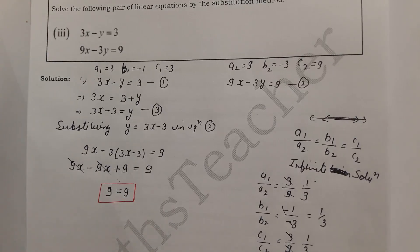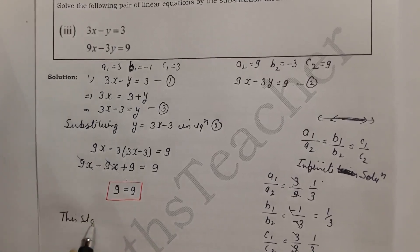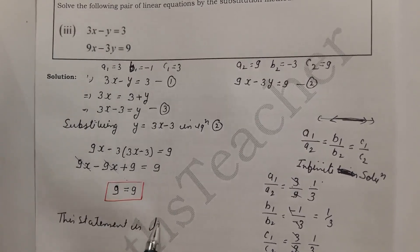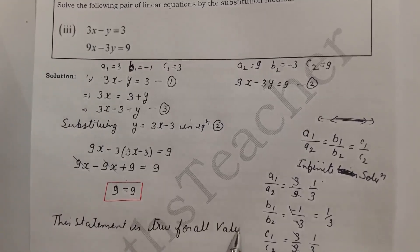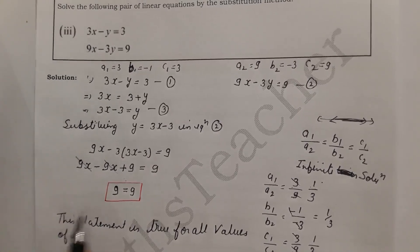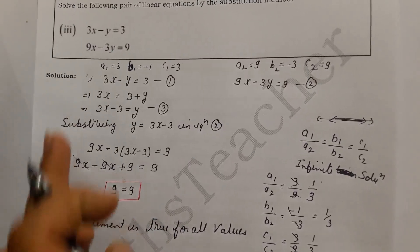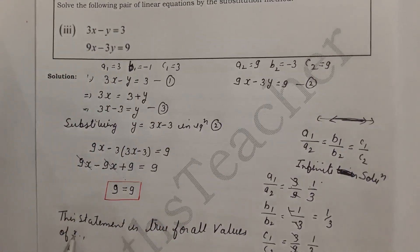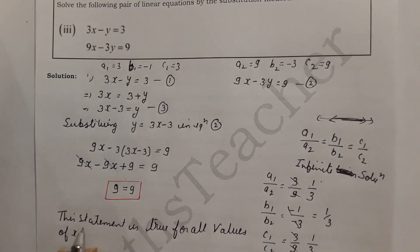The statement 9 equals 9 is true for all values of x. So we write that this statement is true for all values of x. Since x has no specific value, we also cannot find a specific value of y. The system has infinite solutions.